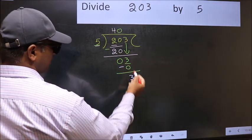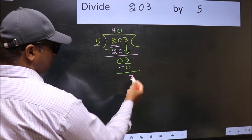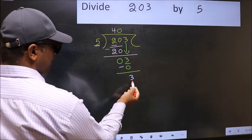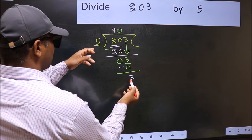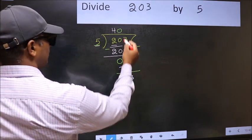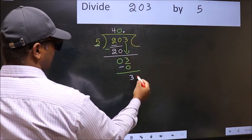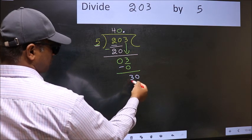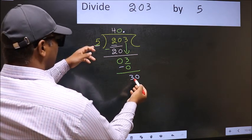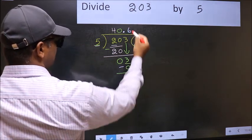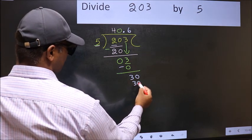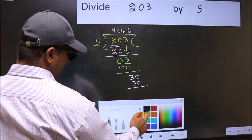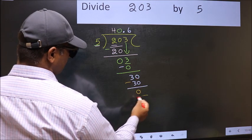Over here, we did not bring any number down, and 3 is smaller than 5. So now you can put a dot and take 0, giving us 30. When do we get 30 in the 5 table? 5 times 6 is 30. Now you should subtract: 30 minus 30 is 0.